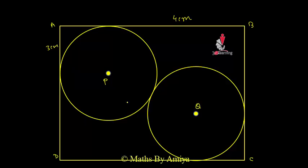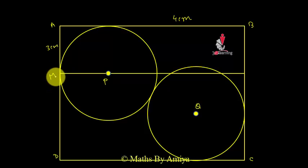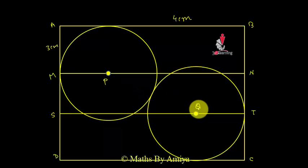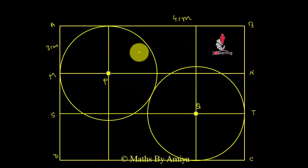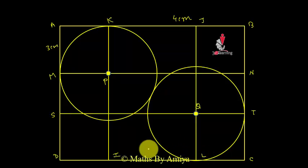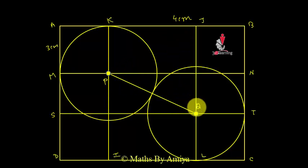Now we need to do some construction. Draw a line MN parallel to AB. Draw another line ST parallel to AB but passing through the centers P and Q respectively. Draw two more lines parallel to AD and BC passing through P and Q — name them KI and JL. Now join the centers P and Q, and say this angle is theta.